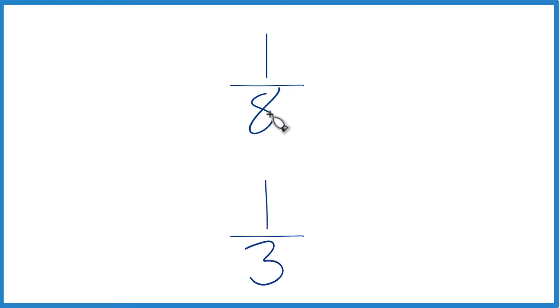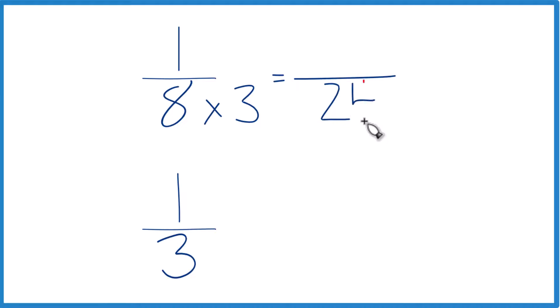Let's do that. How about we just multiply 8 times 3? Because 8 times 3, that equals 24. And then down here, 3 times 8. Because 3 times 8, that also equals 24.